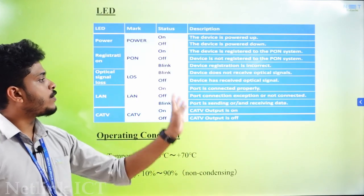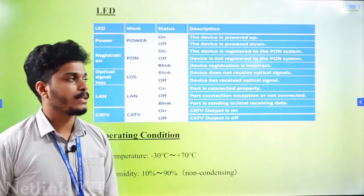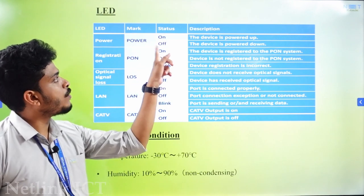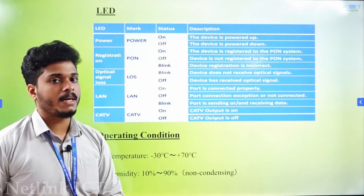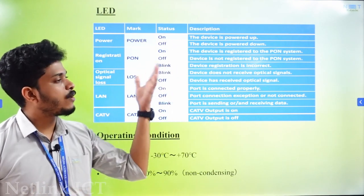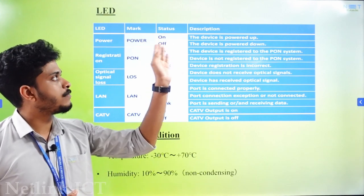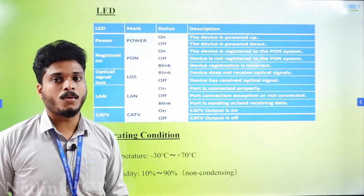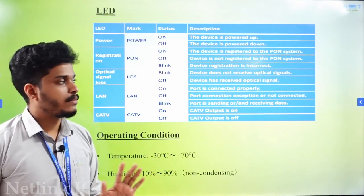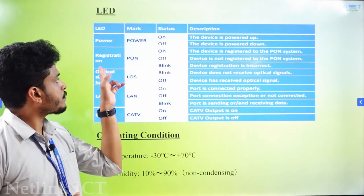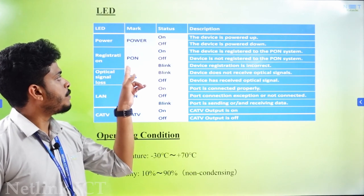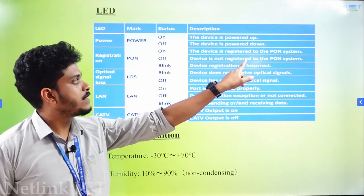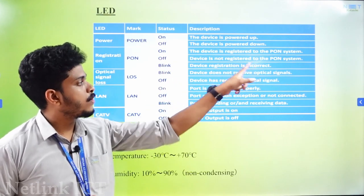We call it Light Indications. The first one is LED Power — what is LED power? The device is powered up and the indicator turns ON. The PON — Passive Optical Network — indicator means the device is registered to the PON system.